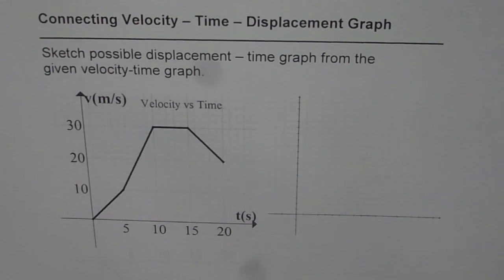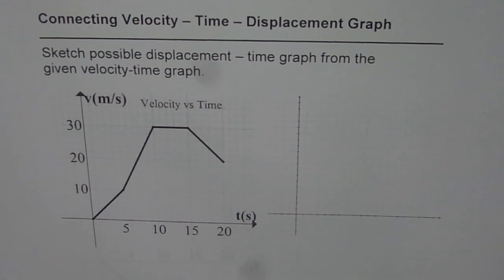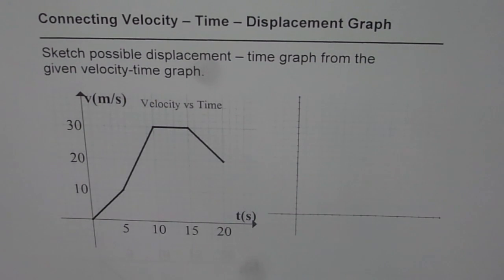We do have a video where we have plotted the distance-time graph for the same scenario. I hope you can appreciate the difference. Displacement is a quantity which has direction. So if you are going away, then the distance is increasing. But if you are approaching, then the distance between the two positions decreases.